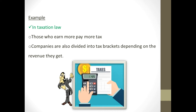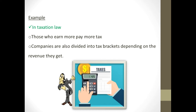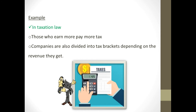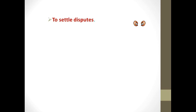Imagine everyone paying the same amount of tax — the poor paying the same as the rich. This would mean the poor would live and work just to pay tax, with no money for food or other basic needs. That would not be fair. So law promotes social justice.